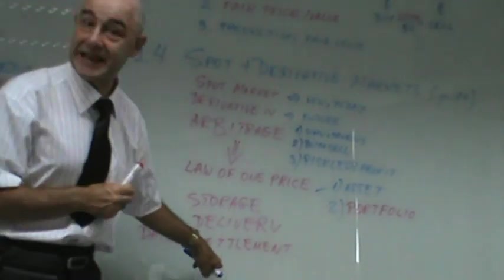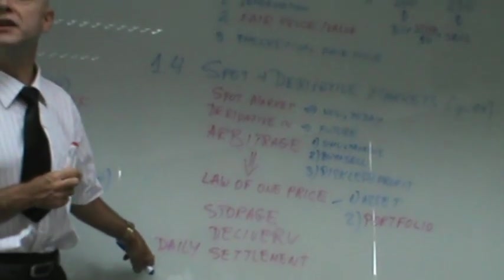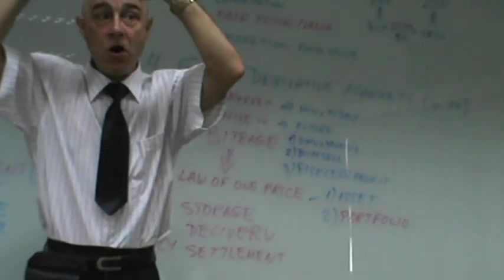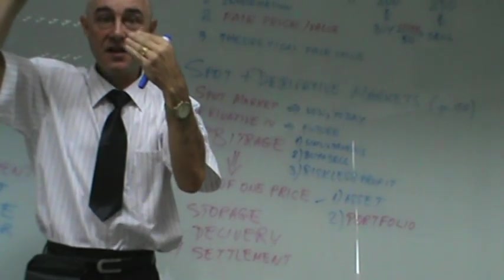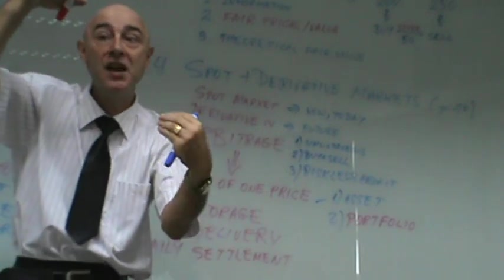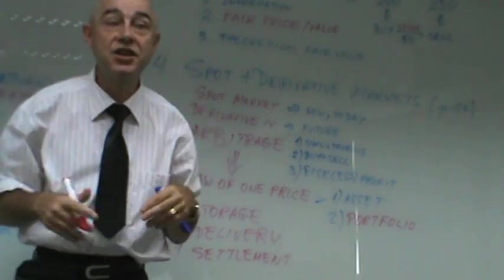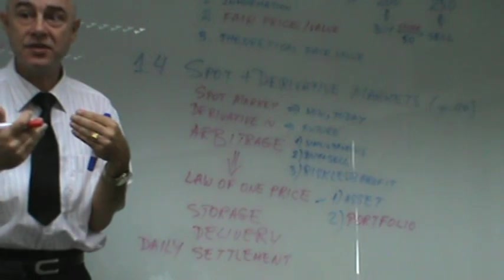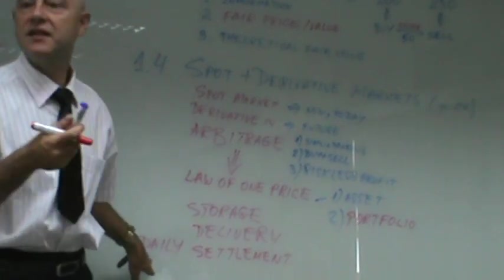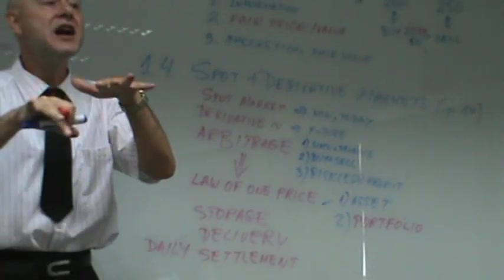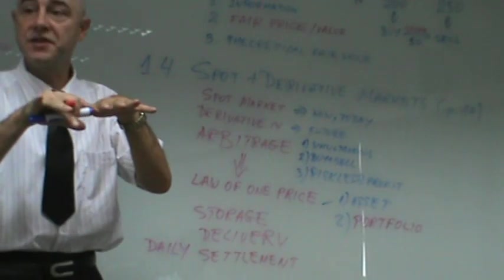Daily settlement occurs at the end of every trading day. If the price goes up, the long position gets extra money; the short, who is losing, pays the difference to the long. Every day the winner gets extra money in their account and every day the loser pays. This keeps risk managed. So settlement simply means clearing the accounts and clearing the differences between the buyer and seller.